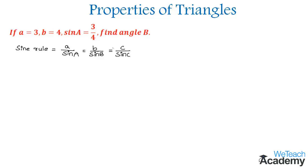By using this rule where we have the values of A, B, and sin A, we can find the value of angle B by considering the first two terms: 3 divided by sin A which is 3/4, equal to B which is 4 divided by sin B.